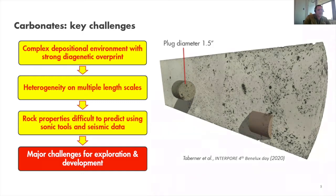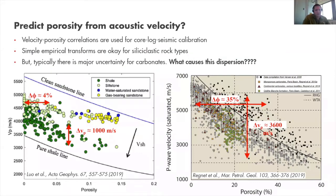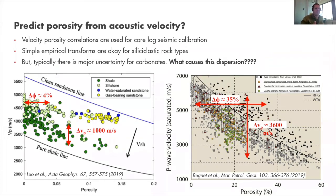Why do we want to predict porosity from acoustic velocity? Porosity correlations are used for core-to-log and seismic calibration to gain an image of the subsurface. We need to understand what the waves passing through it actually mean. For simple empirical transforms — essentially a relation between P-wave velocity and porosity — simple transforms are okay for siliciclastic rock types.